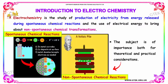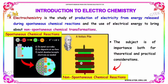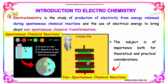Electrochemistry is a study of the production of electricity from energy released during spontaneous chemical reactions, and the use of electrical energy to bring about non-spontaneous chemical transformations. Here is an example of a spontaneous chemical reaction, and here is an example of a non-spontaneous chemical reaction.